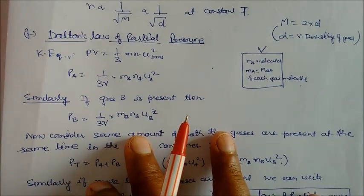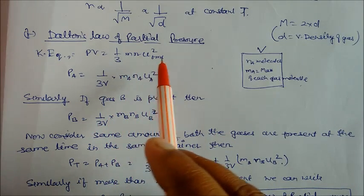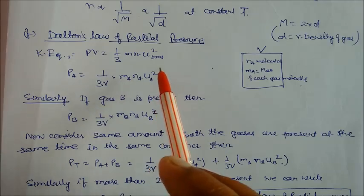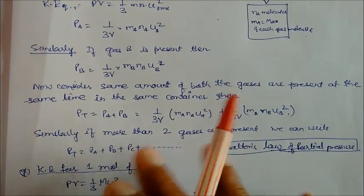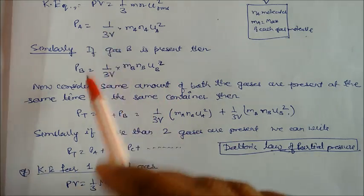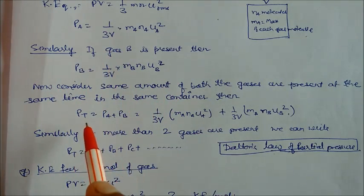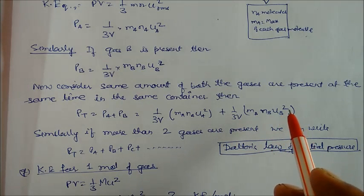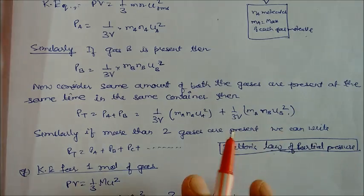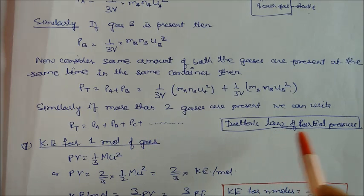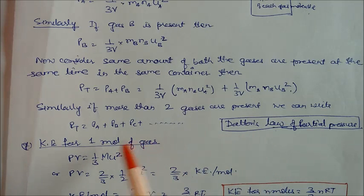For Dalton's Law of partial pressure, using pV = (1/3)mNu_rms², the partial pressure of gas A is pA = (1/3V) × mA × NA × uA², and for gas B: pB = (1/3V) × mB × NB × uB². Adding these gives the total pressure pT = pA + pB. For more gases, additional terms are added. The total pressure equals the sum of all partial pressures — this is the derivation of Dalton's Law of partial pressure.